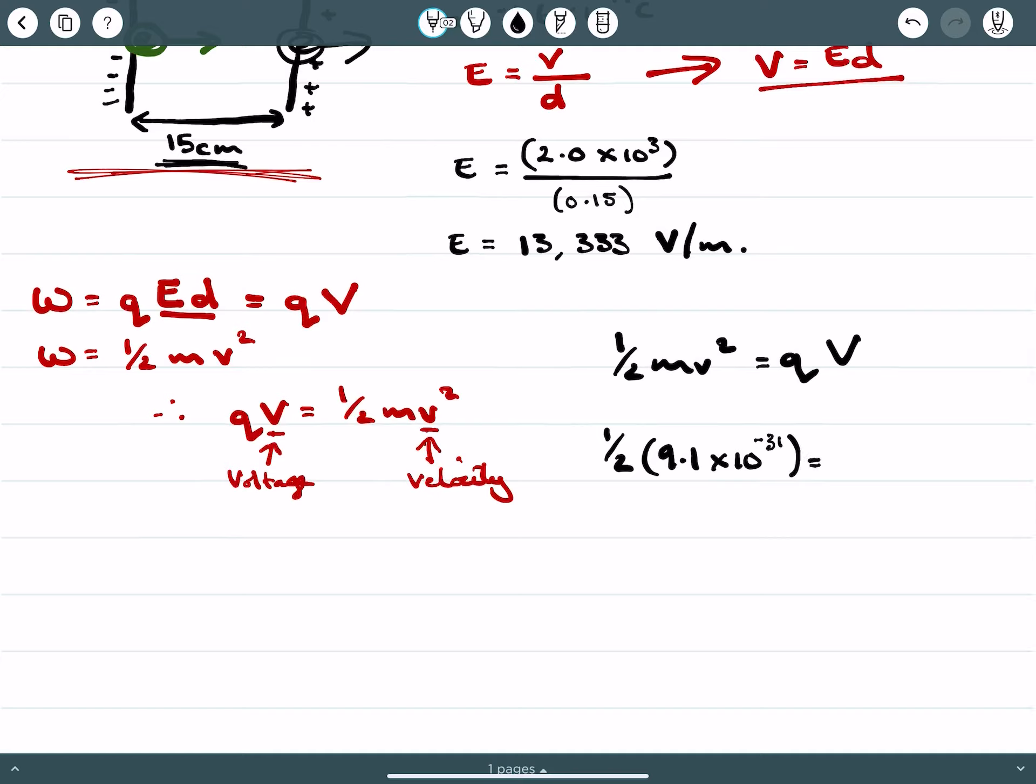Okay, the charge of an electron, 1.6 times 10 to the negative 19. And the voltage, we have 2.0 times 10 to the 3 volts.